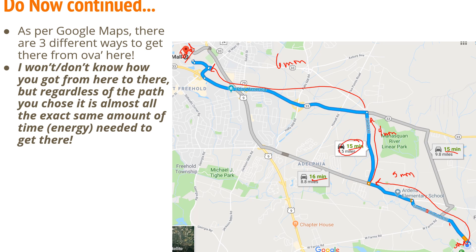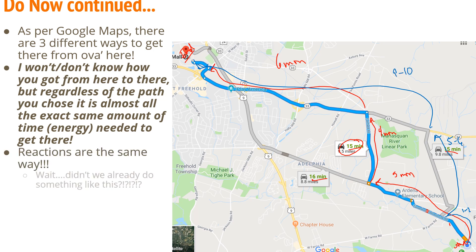If you look at the other path — maybe this other route in blue — this might only take about one to two minutes, then from here to here about five to six minutes, and then ultimately nine to ten minutes. So that's where you'd also get your 15. Again, we don't really know how we get from over here to over there, and we don't really care. We just know it takes about the same amount of time.